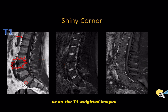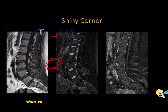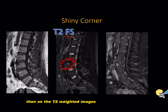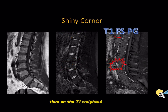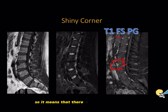On the T1-weighted images we see low T1 signal intensity. On the T2-weighted images with fat suppression we see increased T2 signal intensity, which is related to bone marrow edema. On the T1-weighted images with gadolinium and fat suppression, the lesion is bright, meaning there is active inflammation.